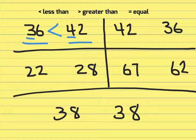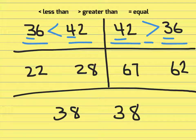In the next set of numbers we have 42 compared to 36. Again they will look at four tens, three tens. They know that four tens is greater than three tens. So they will say 42 is greater than 36.